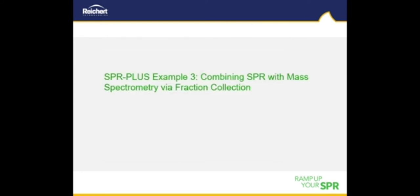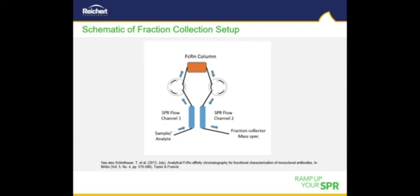In our last example, we show that SPR Plus can be used to combine SPR with mass spectrometry in combination with a fraction collector. For this third example, the SPR Plus system was equipped with a pneumatic pump, auto sampler, valve manifold including a microcolumn, and the fraction collector. The microcolumn was filled with CM Sephadex C50 and was placed between the two flow channels of the two-channel SPR spectrometer.